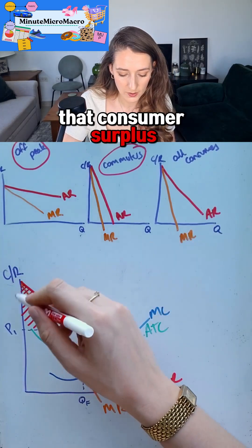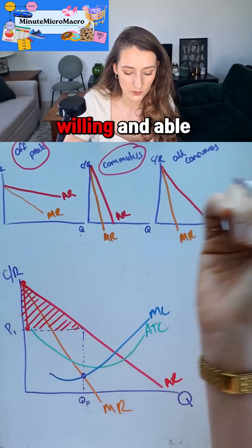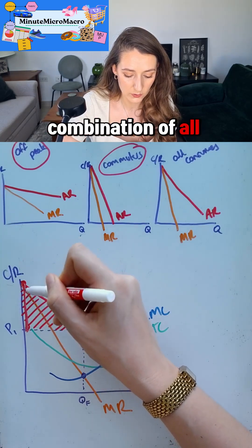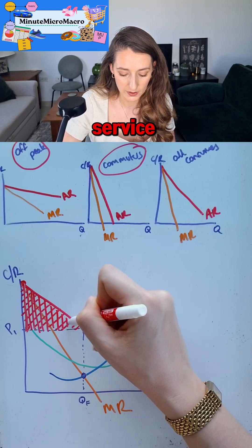That consumer surplus represents the difference between the price the consumer was willing and able to pay and the price that they paid for the product. It's the culmination of all of these vertical lines—that's my consumer surplus.